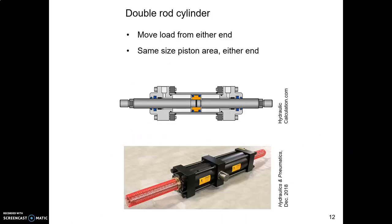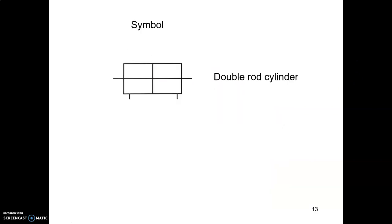There is an unusual kind of cylinder called a double rod cylinder, where it's the same size area in both ends. There's not a rod end and a piston end. It's symmetrical. Here's what it looks like in real life. And so you can bring oil in either port and move it at the same speed with either port. And here is the symbol for a double rod cylinder.